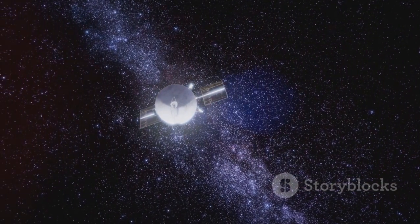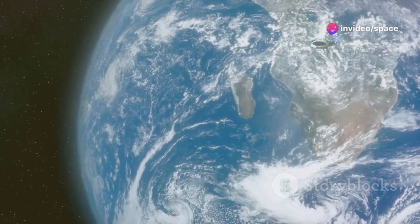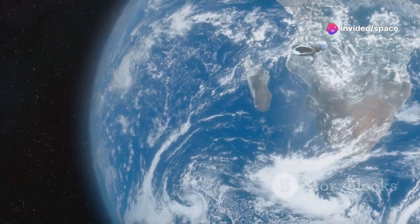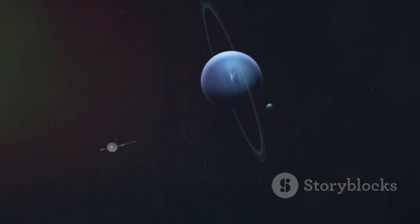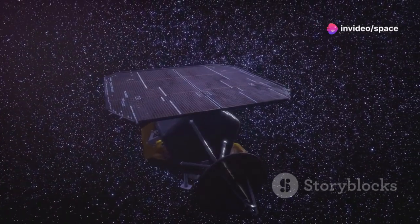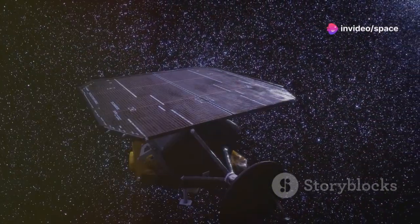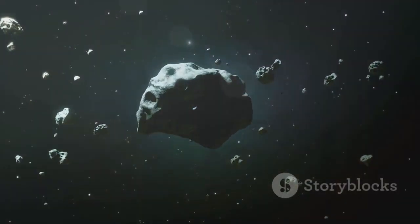Voyager 1 carries a unique message to the cosmos. Attached to the spacecraft is a golden record containing sounds and images representing Earth's diversity. The record includes greetings in 55 languages and music from various cultures. It also features images of Earth's landscapes and inhabitants. The golden record is a gesture of goodwill and peace.